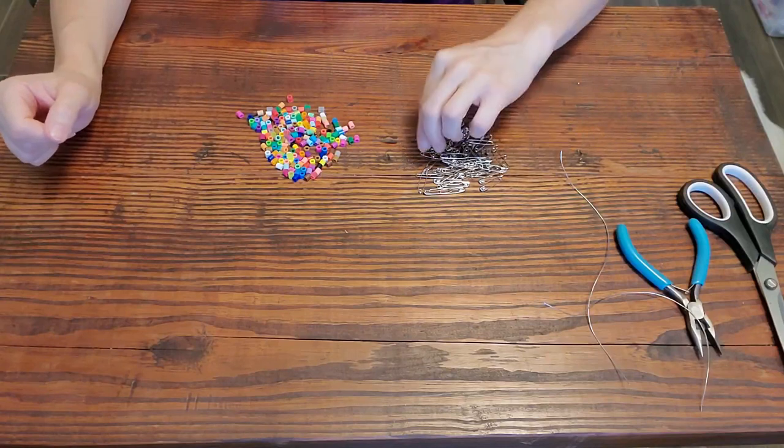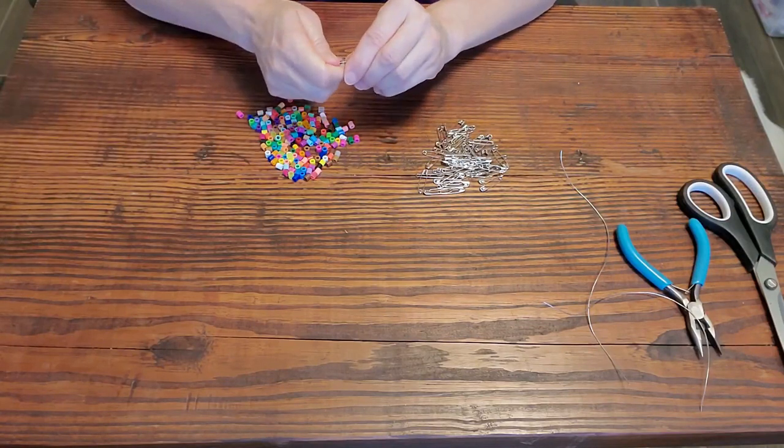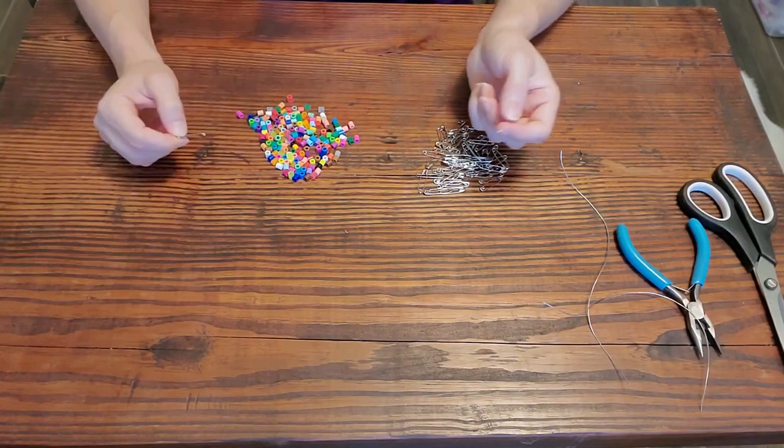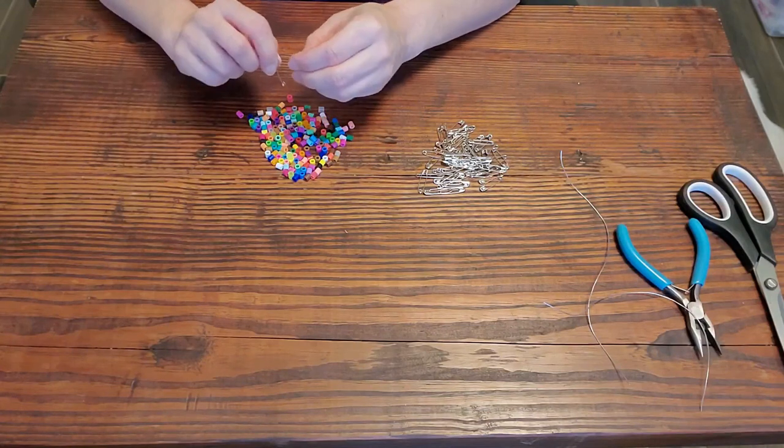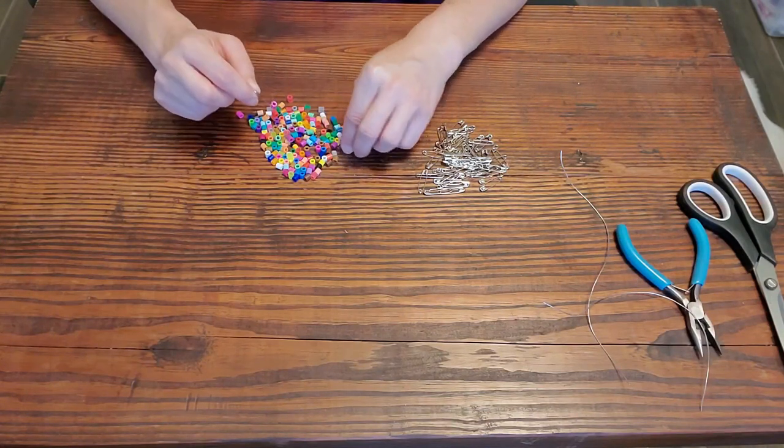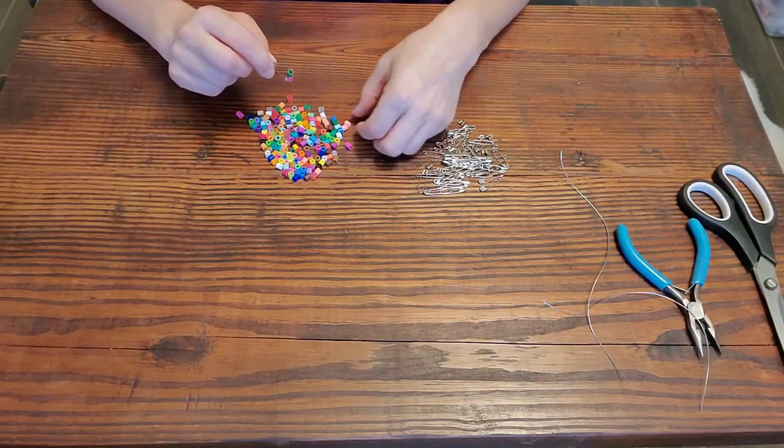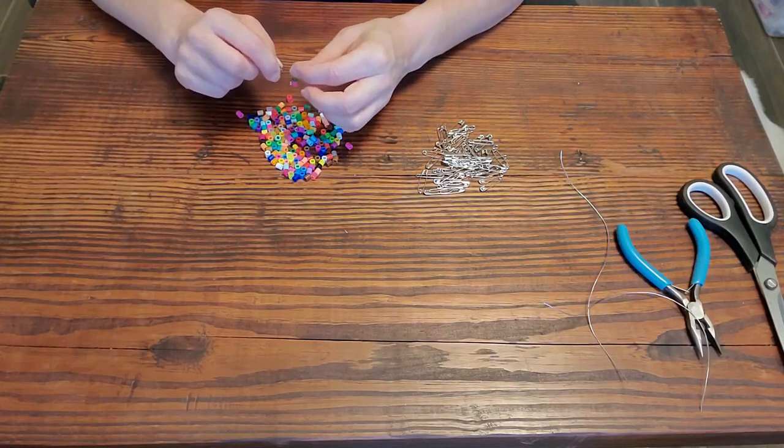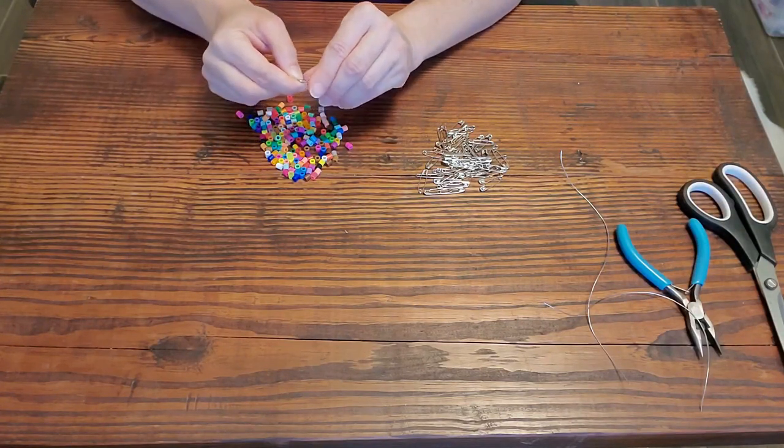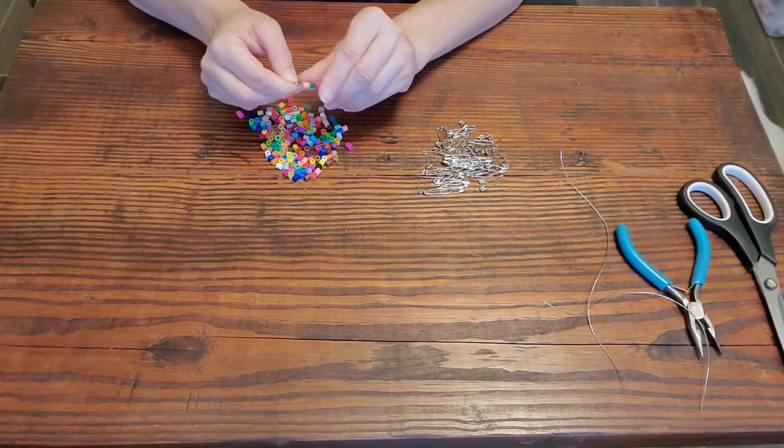Alright, let's get started. So the first thing you're going to do is decorate your safety pins. All you're going to do is take the colored beads that you're interested in using, and you can create a pattern or you can just do kind of random like I'm going to do. You're just going to put about three beads onto your safety pin and close it.